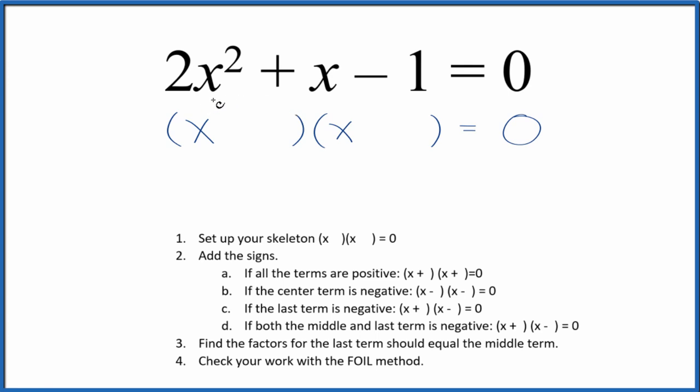If you're asked to factor the equation 2x squared plus x minus 1 equals 0, here's how you do it.